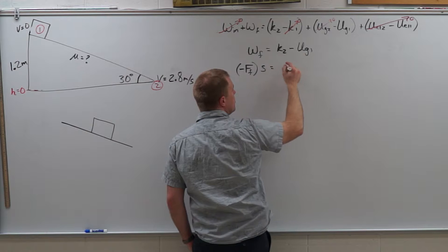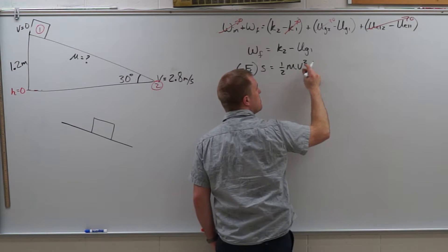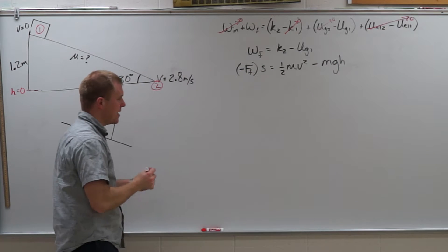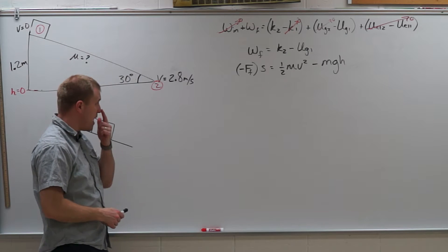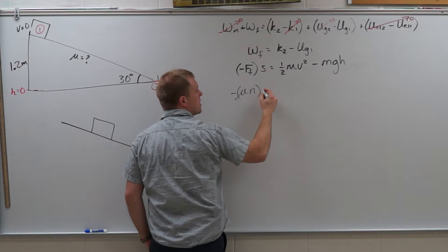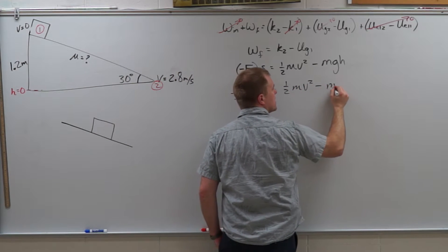This is equal to K2 which is going to be one half mv squared, where v is the bottom speed, minus mgh where h is the height it starts at. So we do have force of friction so we're going to substitute in for that. So I have negative mu times the normal force times s equals one half mv squared minus mgh.